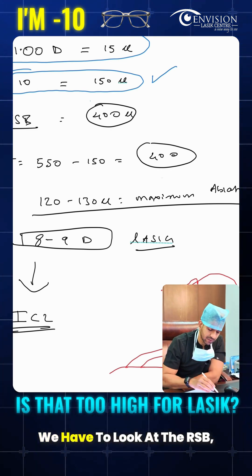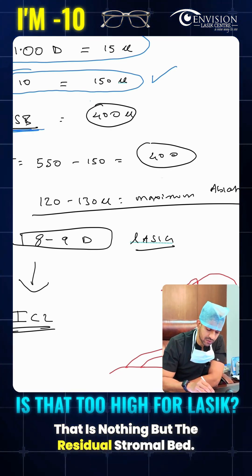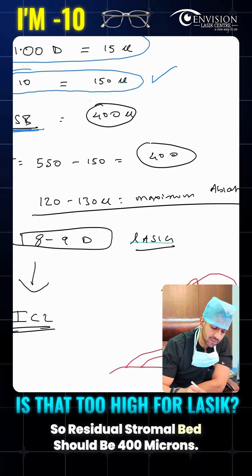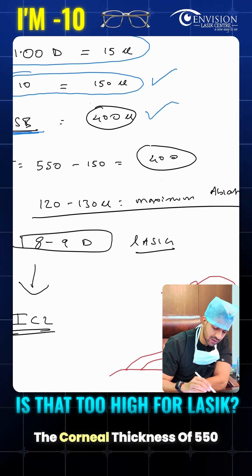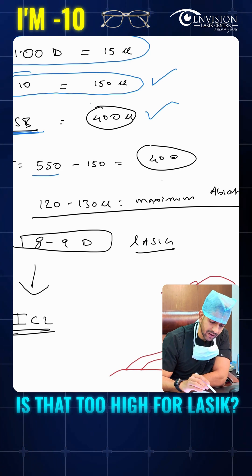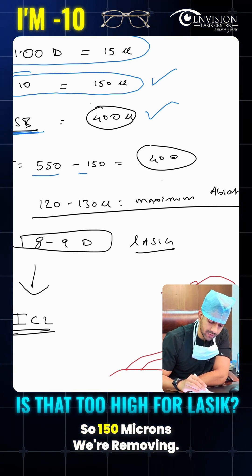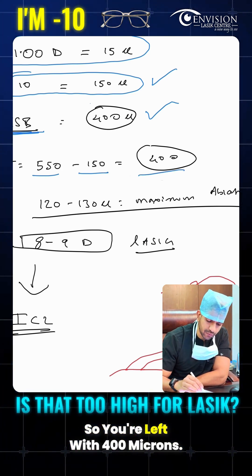Now ideally, for any laser vision correction, we have to look at the RSB, that is nothing but the residual stromal bed. The residual stromal bed should be 400 microns. So let's say you're somebody with a cornea thickness of 550. With minus 10 diopters, we're removing 150 microns, so you're left with 400 microns.